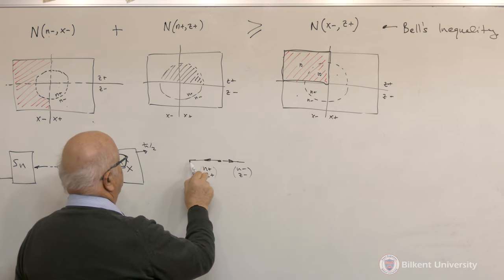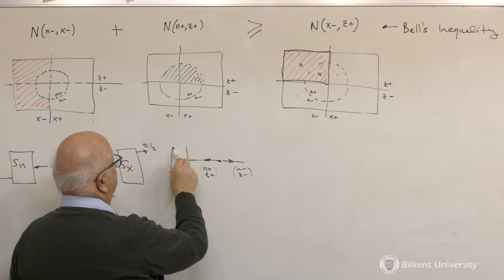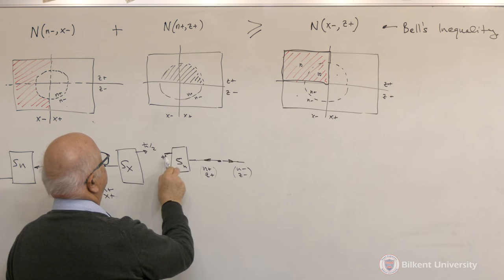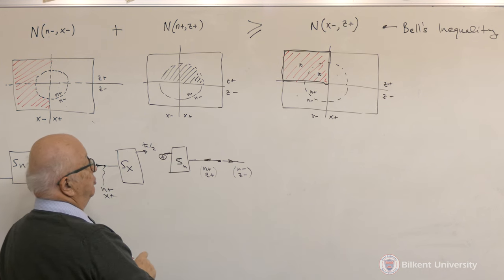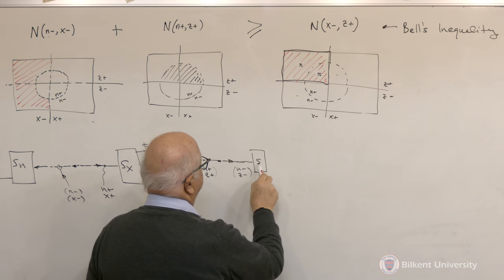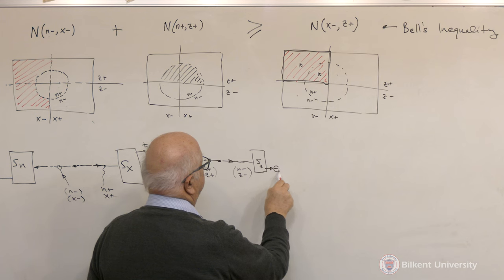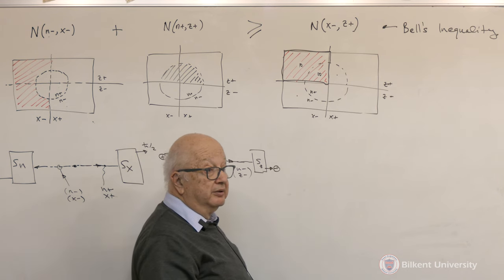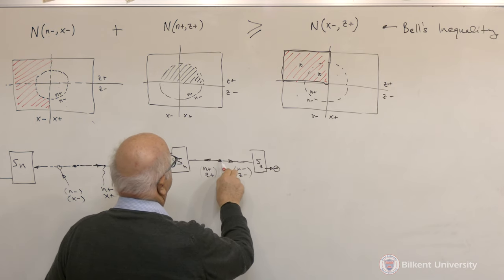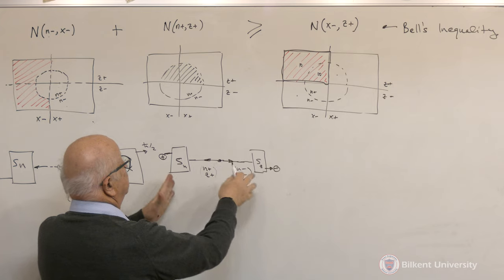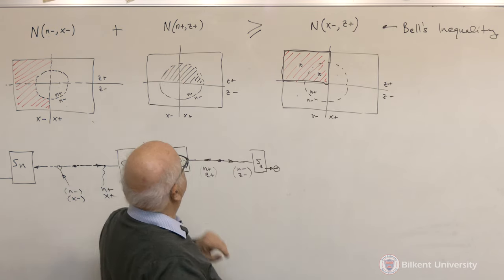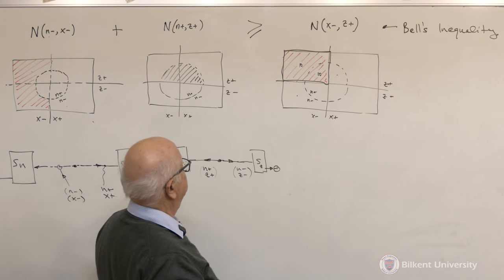I measure one of them over here. Suppose I again measure s_n here and I get a plus measurement here, plus ℏ/2. But now I have to measure the z component here, and I am supposed to get a minus. So according to the hidden variable theory, the number of processes that end up like this is going to be equal to n-plus, z-plus.